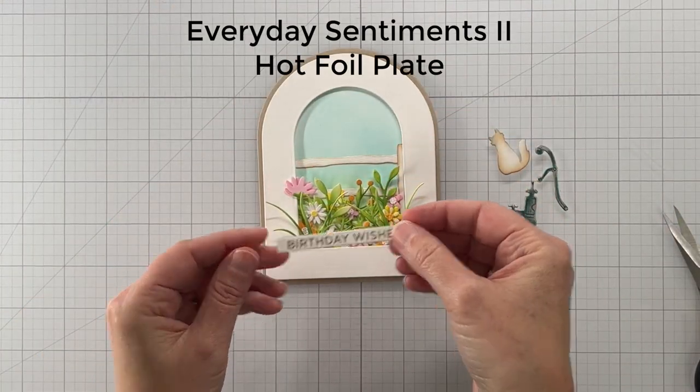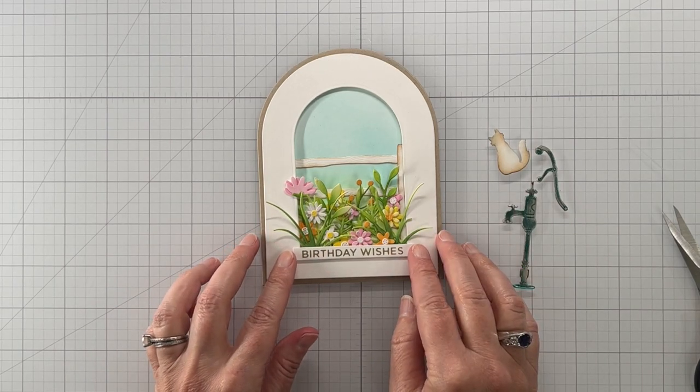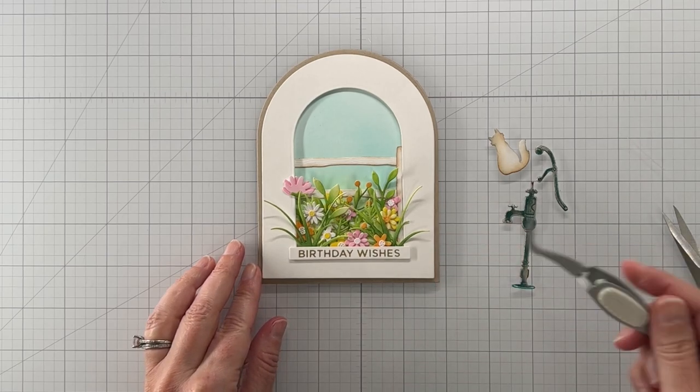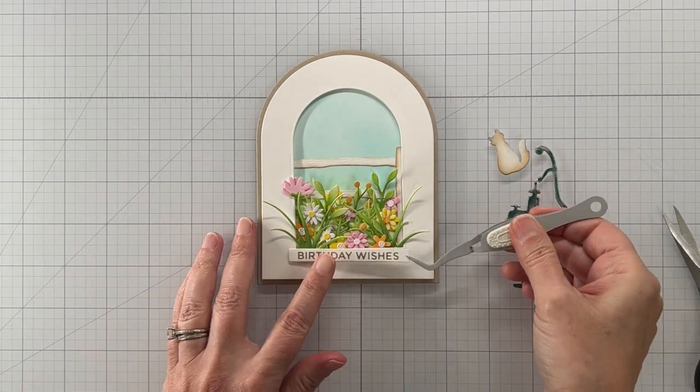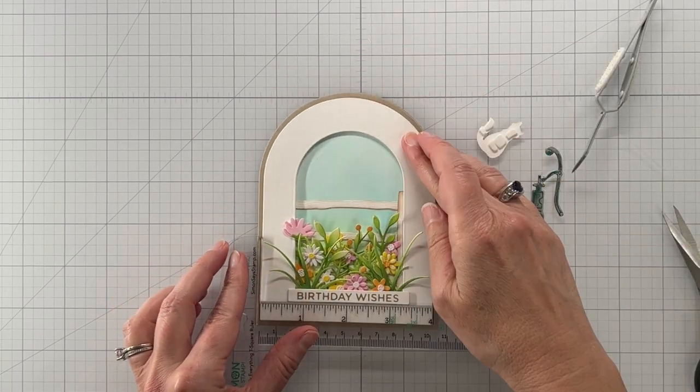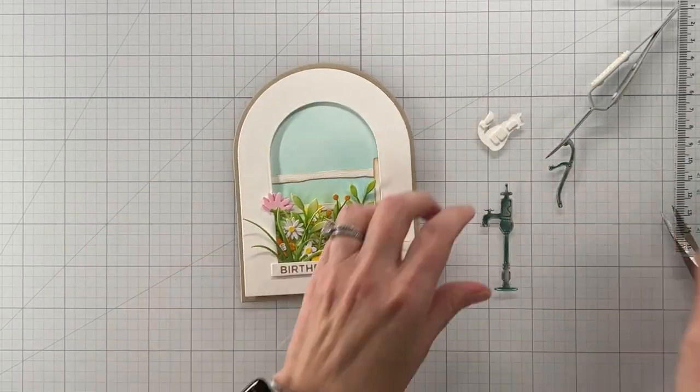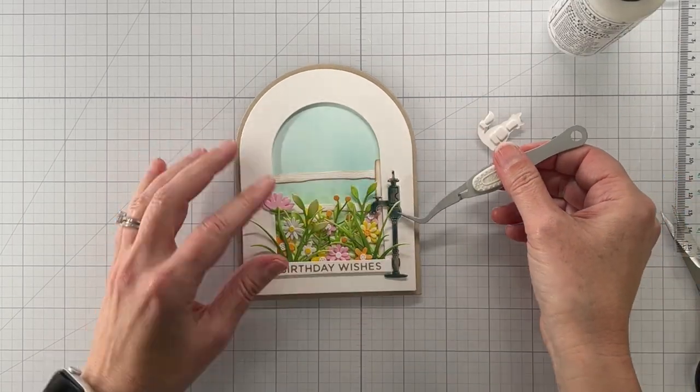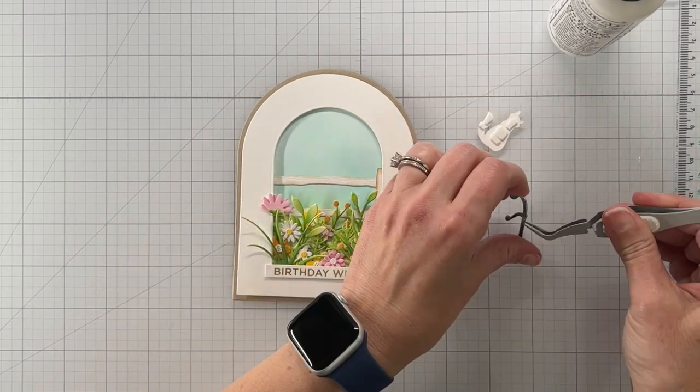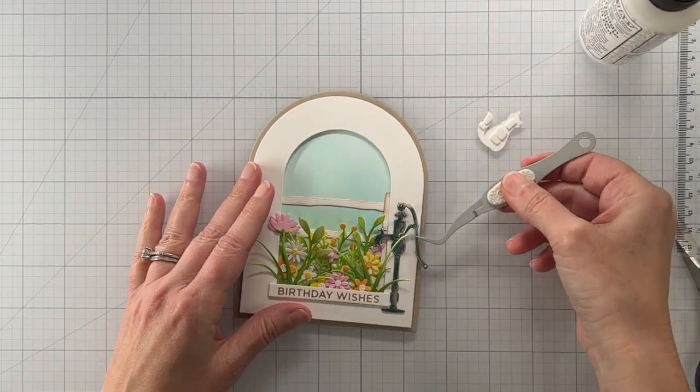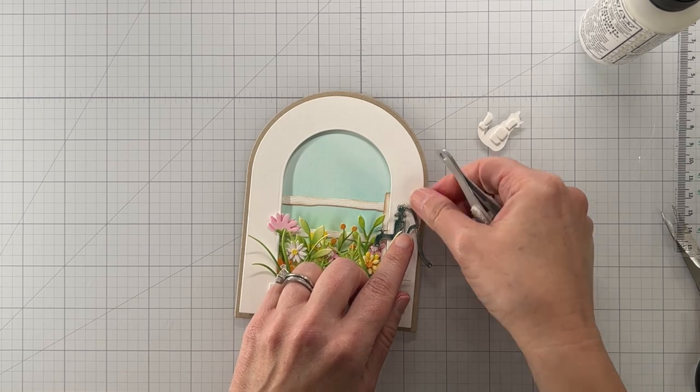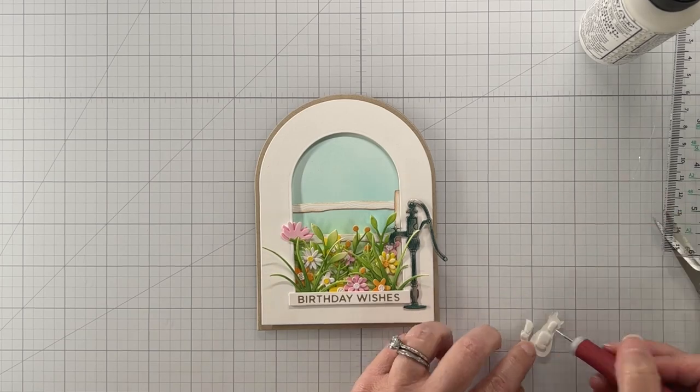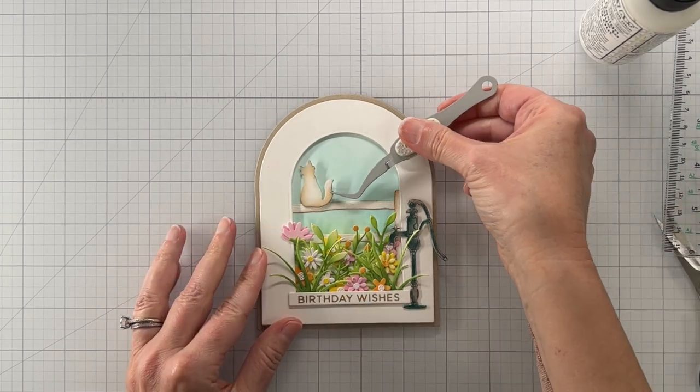Now here's my sentiment, this is a hot foiled sentiment. I hot foiled it with matte gold foil and I think I added a few paper strips on the back just to beef it up. I'm going to glue my water pump now. Without the water pump it kind of looks like you're just looking out the window at a nice garden scene but I wanted to have that water pump. There's something I love about it, it reminds me of going camping.